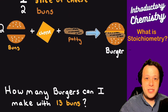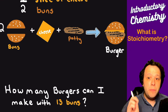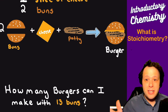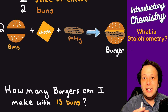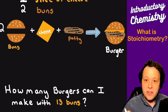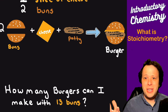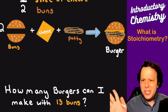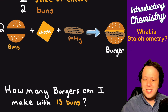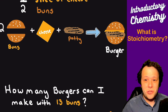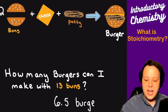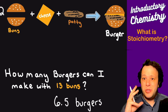Here's a simple question about this recipe: how many burgers can I make with 13 buns? Say you only have 13 buns but have as much hamburger meat and cheese as you want — they're in excess. How many burgers can you make? Well, 13 divided by 2 gives you six and a half burgers. You were able to figure that out without any fancy chemistry math — you just looked at the relationship.